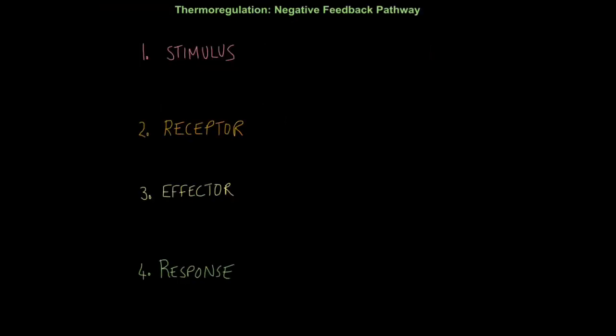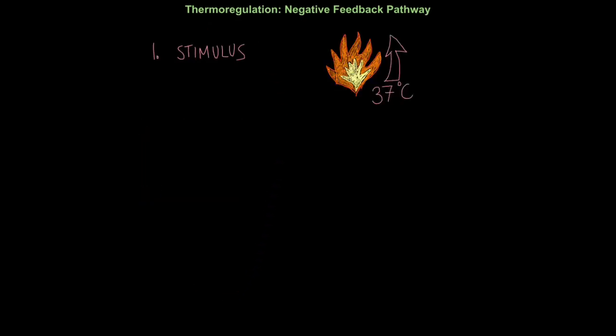Now we're going to look at the negative feedback pathway for thermoregulation or temperature control. If you remember from my homeostasis overview tutorial, I said there were four key steps to any negative feedback pathway. The stimulus, that's the change within the body. The receptor, the part of the body that detects the change. The effector, that's the most important part. The parts of the body that actually do something to bring about the response. Now the response is the reversal of the initial change. So the response brings about negative feedback, a reversal of the change.